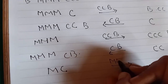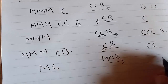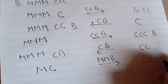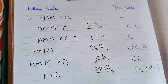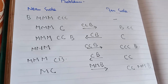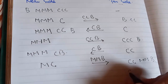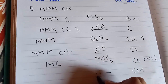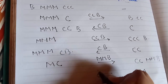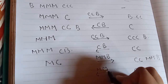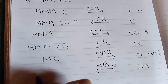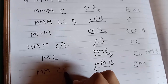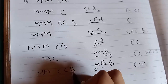Two missionaries and one boat at the near side. At the far side we have two cannibals, two missionaries, and one boat. After that, at the far side we have one cannibal and one missionary. At the near side we have two cannibals, two missionaries, and one boat.